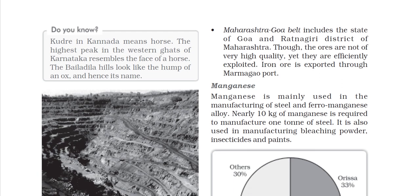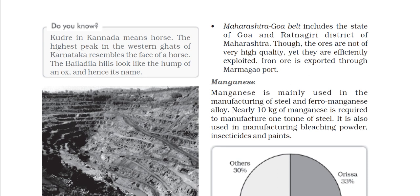The Maharashtra–Goa belt includes the state of Goa and the Ratnagiri district of Maharashtra. The ore is not of very high quality, but it is efficiently exploited. Iron ore is exported through Marmugao port.